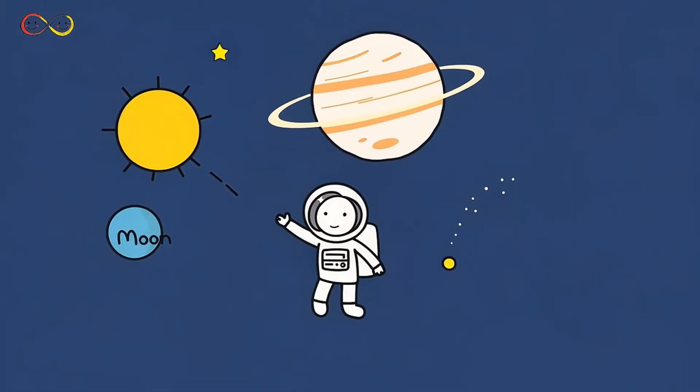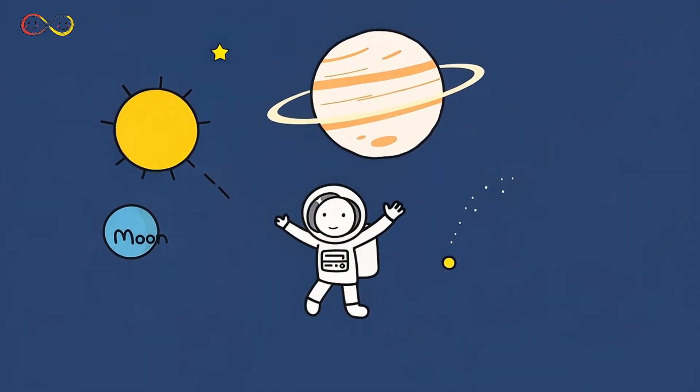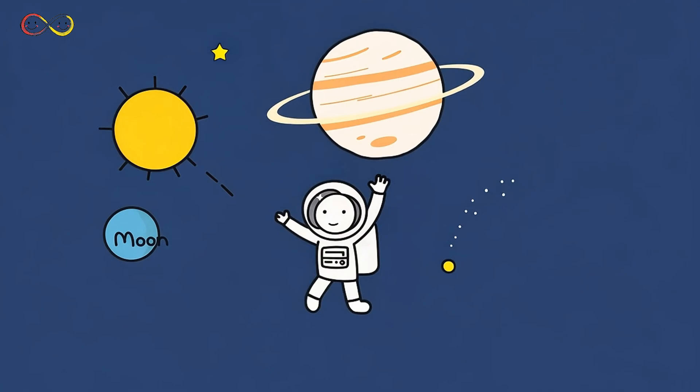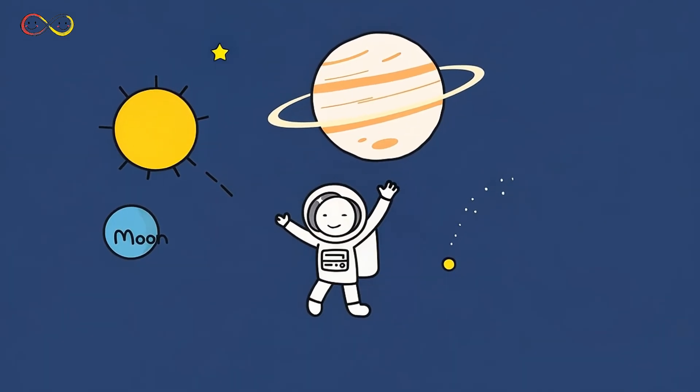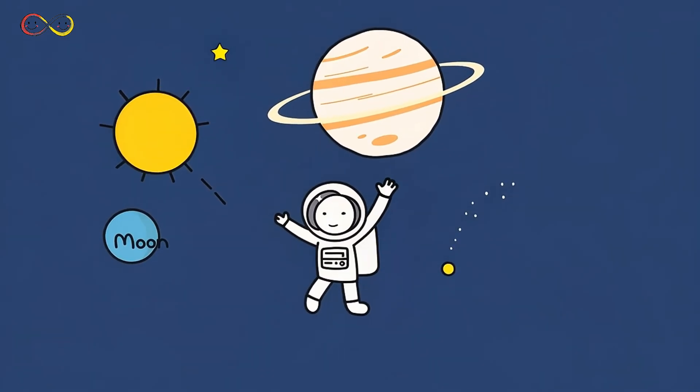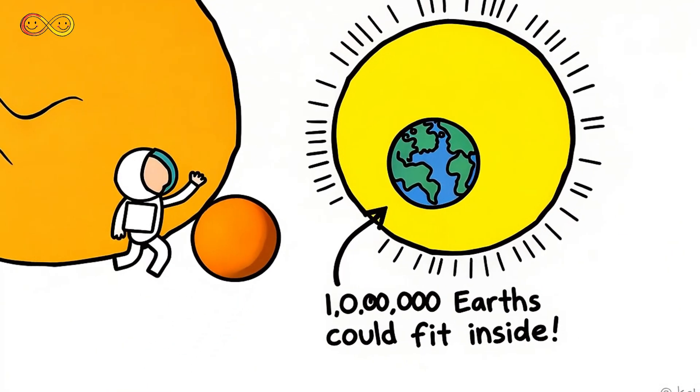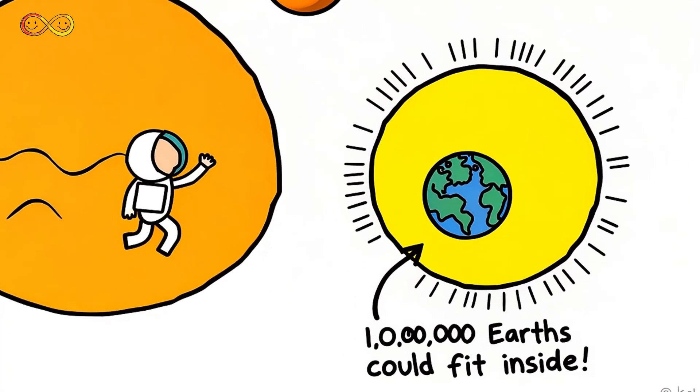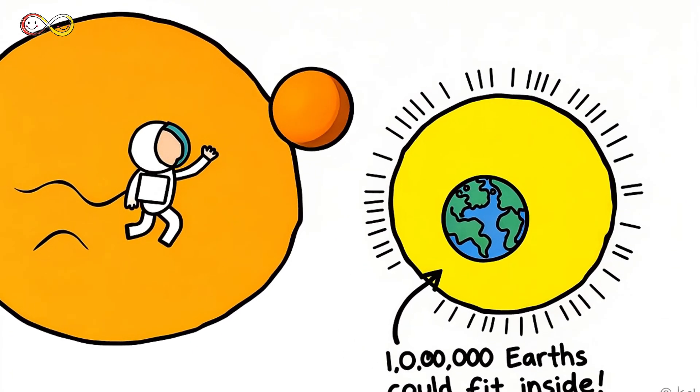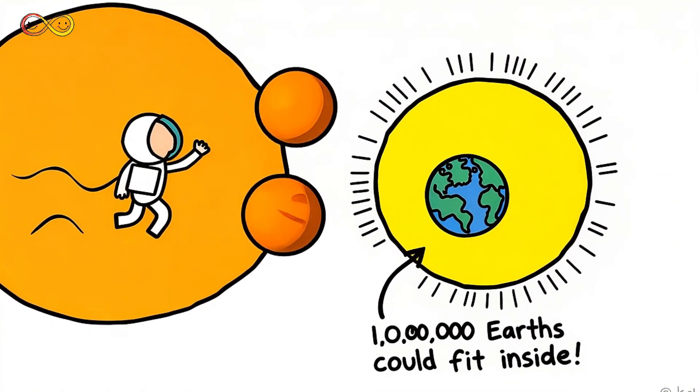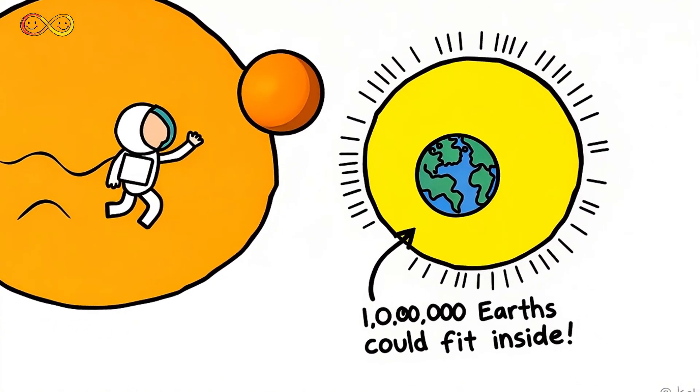So what exactly is a celestial body? Well, it's a fancy way of saying anything that exists in space. Planets, moons, stars, asteroids, even tiny bits of cosmic dust floating through the universe. The biggest celestial body in our solar system is the sun. It's a giant ball of burning gas that gives us heat and light. Without the sun, Earth would be a frozen, lifeless rock. It's so big that over a million Earths could fit inside it.